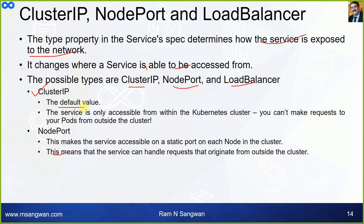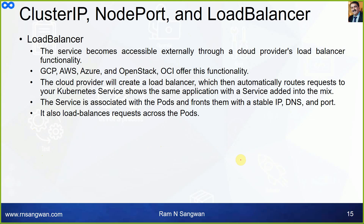NodePort makes the service accessible on a static port on each node in the cluster, meaning the service can handle requests that originate from outside the cluster. LoadBalancer also handles external requests — the service becomes accessible externally through a cloud provider's load balancer. OCI, AWS, Azure, GCP, Google Cloud, and OpenStack all offer this functionality. The cloud provider creates a load balancer which then automatically routes requests to your Kubernetes service.